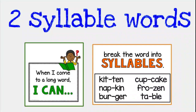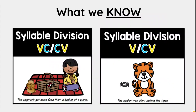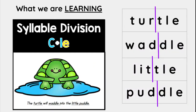Today we are going to continue working on two-syllable words with the consonant L-E, where you have a consonant followed by an L-E at the end of the word. As a friendly reminder, we already know how to divide a vowel-consonant-consonant-vowel and a vowel-consonant-vowel. We are working on how we divide a syllable division with a consonant plus L-E.